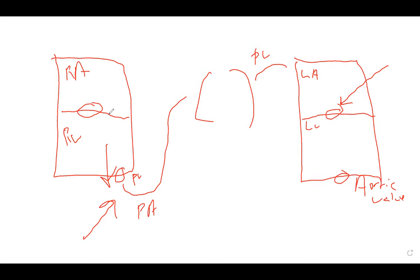It's totally possible to have both ventricular and atrial hypertrophy together — you can have left ventricular hypertrophy and left atrial enlargement simultaneously. You can also have both atria enlarged, which is called bi-atrial enlargement — left atrial enlargement and right atrial enlargement together.